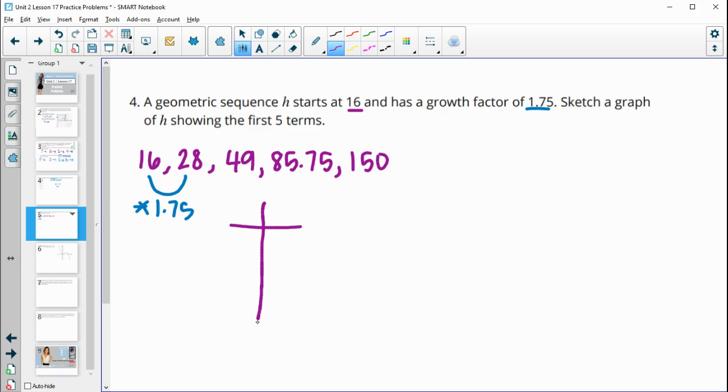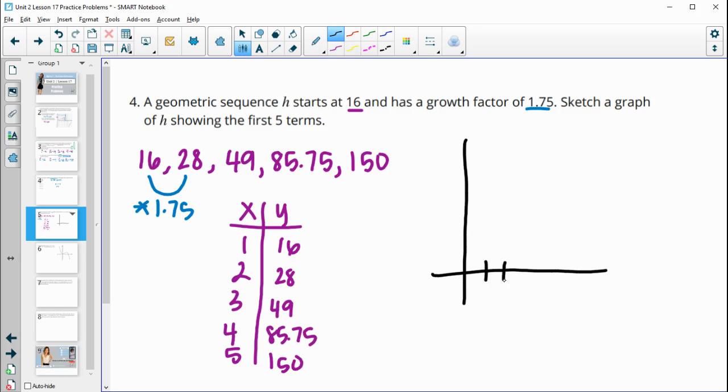Then remember, we're supposed to sketch a graph of this. So remember that if we kind of think of it as x and y, x is going to be the term number, and then y is going to be the term. So it's that 16, 28, 49, 85.75, and then 150. So then we'll go ahead and graph this. So I'll go 1, 2, 3, 4, 5 on the x. And then we have to get up to 150 on the y. So I'll just do this as 50, 100, 150. So I'll just count by 50s. And then halfway in between there would be 25s. And then we'll plot these.